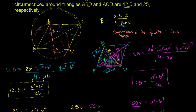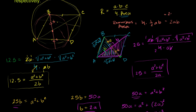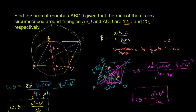Now we can find the area of the rhombus. The area equals 2ab = 2 × 10 × 20 = 20 × 20 = 400. The area of rhombus ABCD is 400.